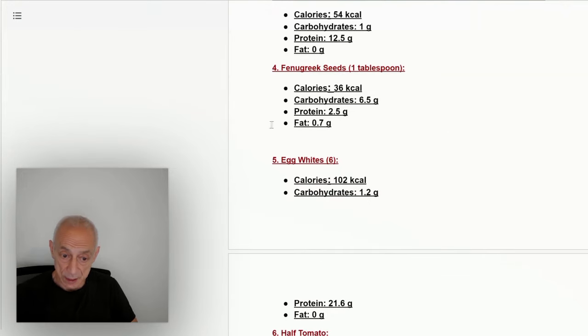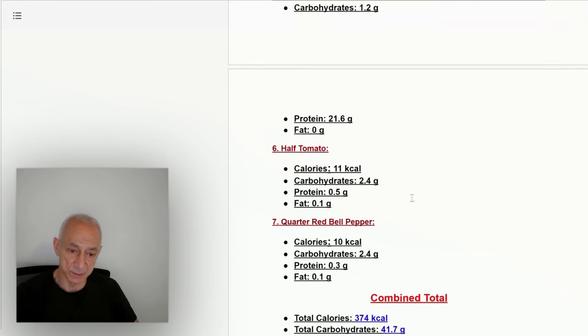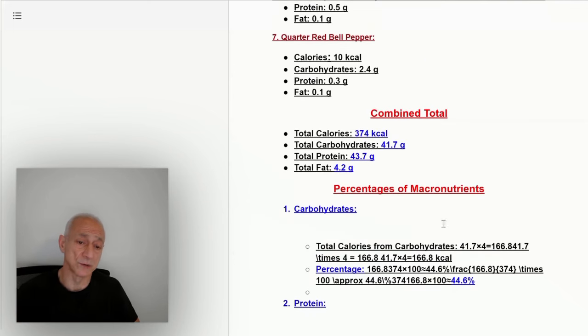For breakfast I also eat an egg omelet. The egg omelet consists of 6 egg whites, 102 calories, traces of carbohydrates, 21.6 grams protein, and zero fat. Inside the omelet I put a half a tomato, a quarter red bell pepper, and a little drop of sea salt. There's a reason why I usually don't add salt, but I do add it in the morning because the minerals are important to have. A little salt is not going to hurt you.